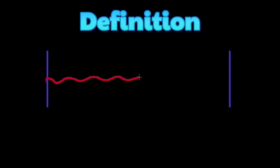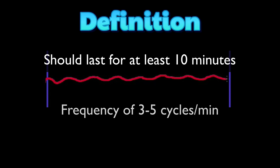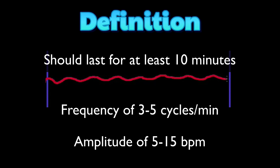As shown in this animation, sinusoidal pattern is a regular oscillation of the baseline fetal heart rate that resembles a sine wave. It is a smooth undulating pattern lasting for at least 10 minutes with a frequency of 3-5 cycles per minute and an amplitude of 5-15 beats per minute above or below the baseline. Baseline variability is absent and the sinus waveform may be confused with good baseline variability.